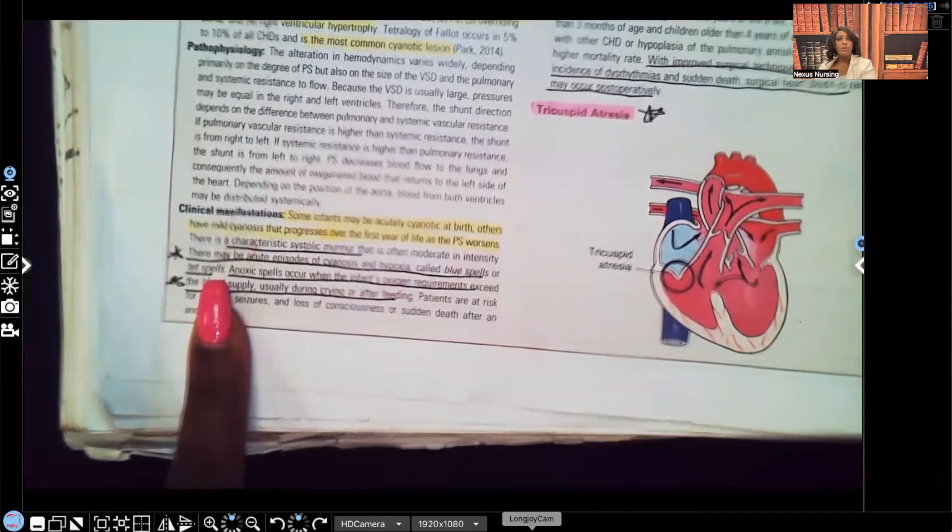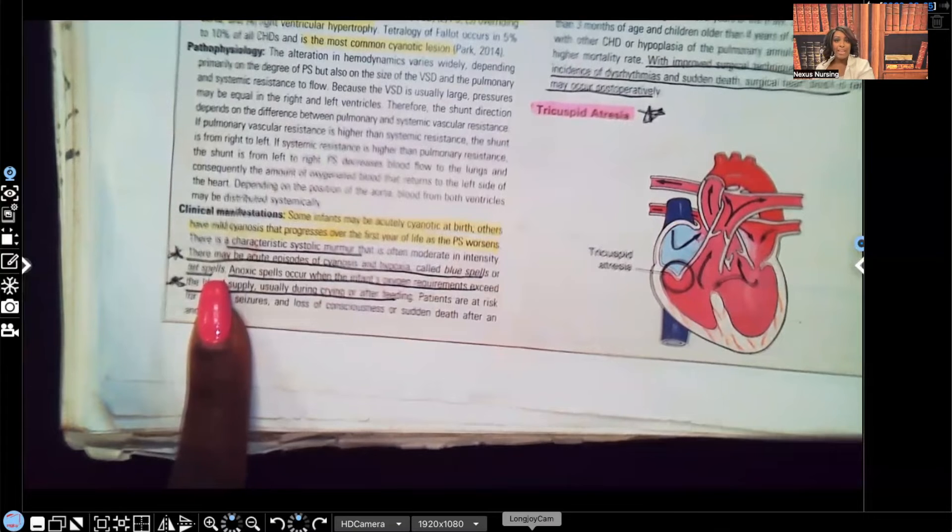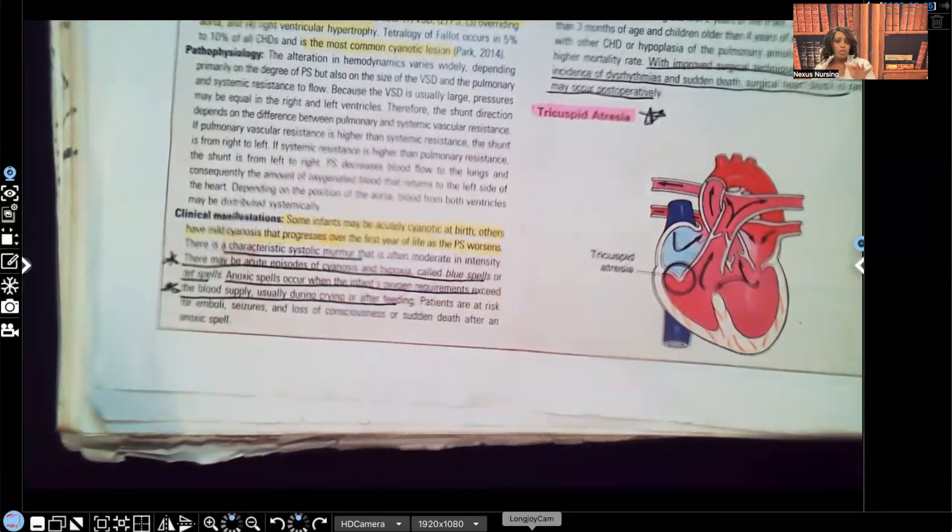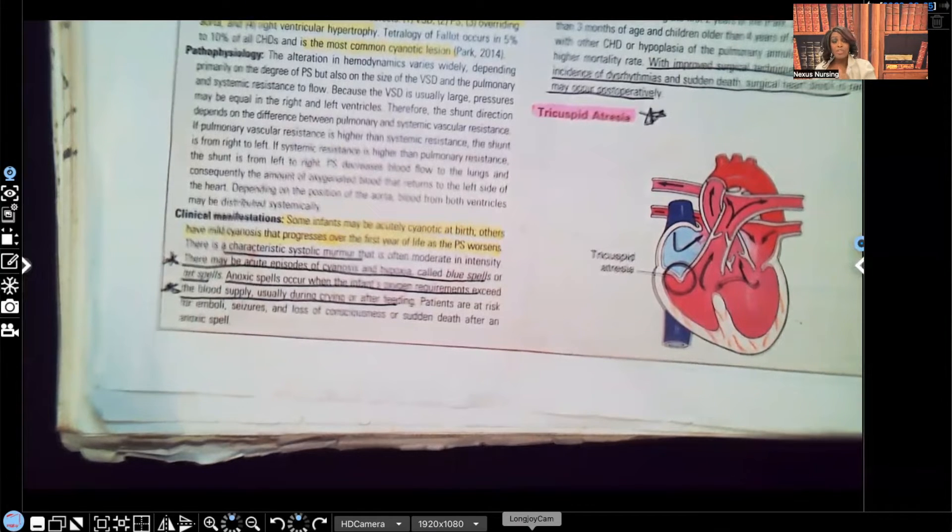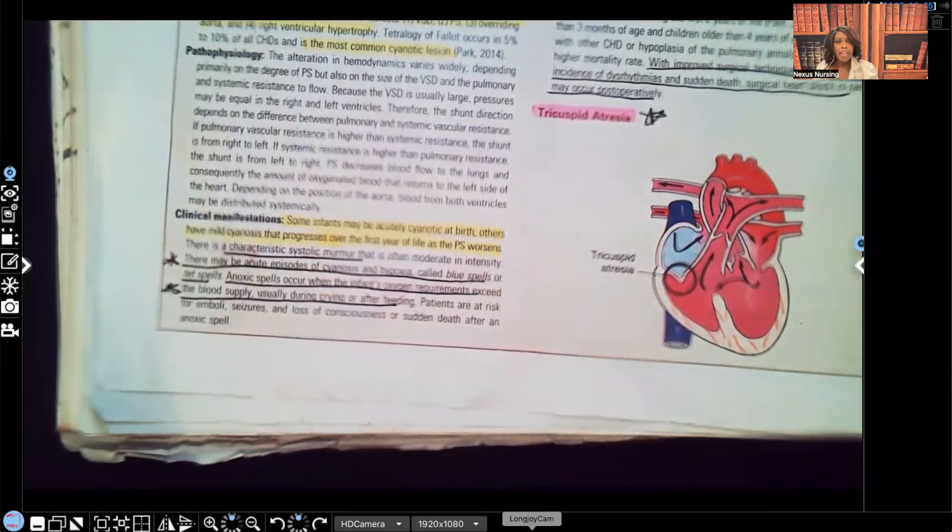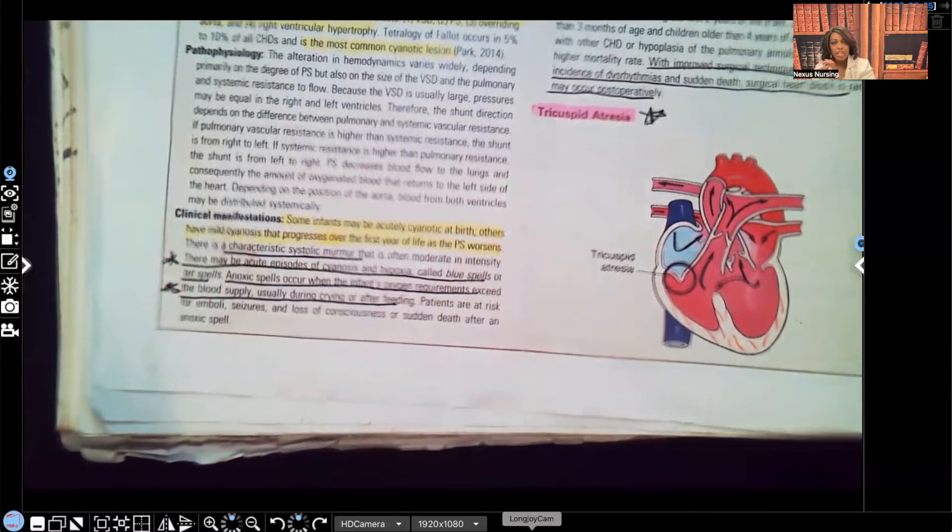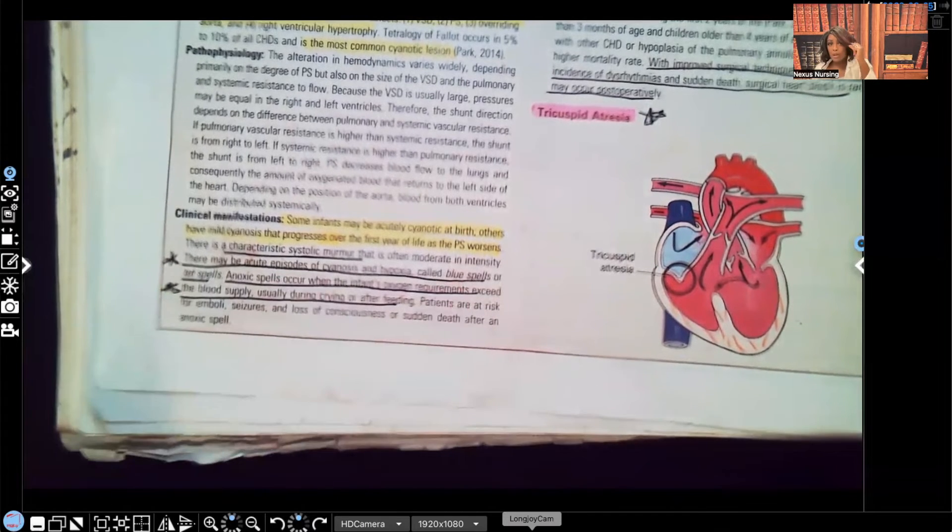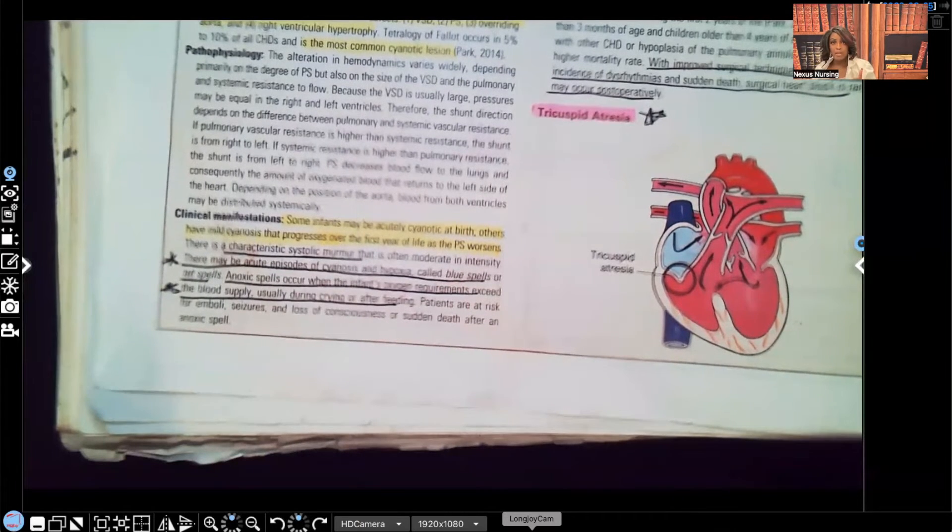Notice that the phrase blue spells and tet spells are in italics. If you watch that video that I made on students new to the nursing program, and I'm teaching you how to study, one of the things I taught you when you see those italicized words, pay attention. There's a reason they change the font. They want you to remember this. When you see blue spells or tet spells, your mind needs to be going to Tetralogy of Fallot.